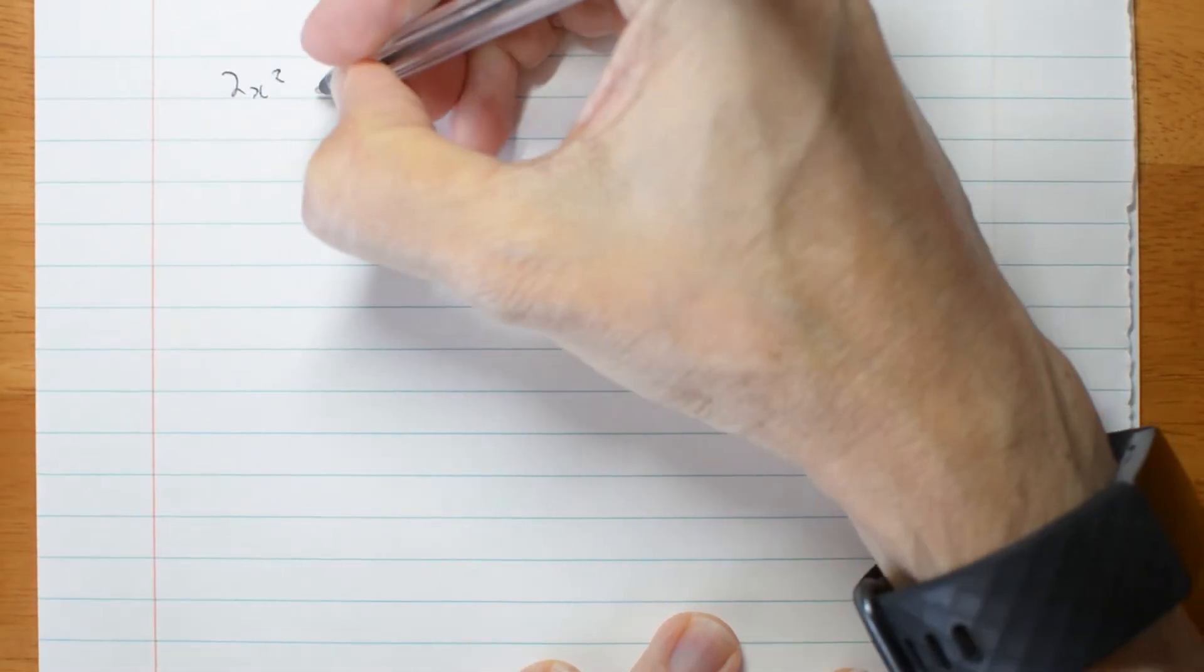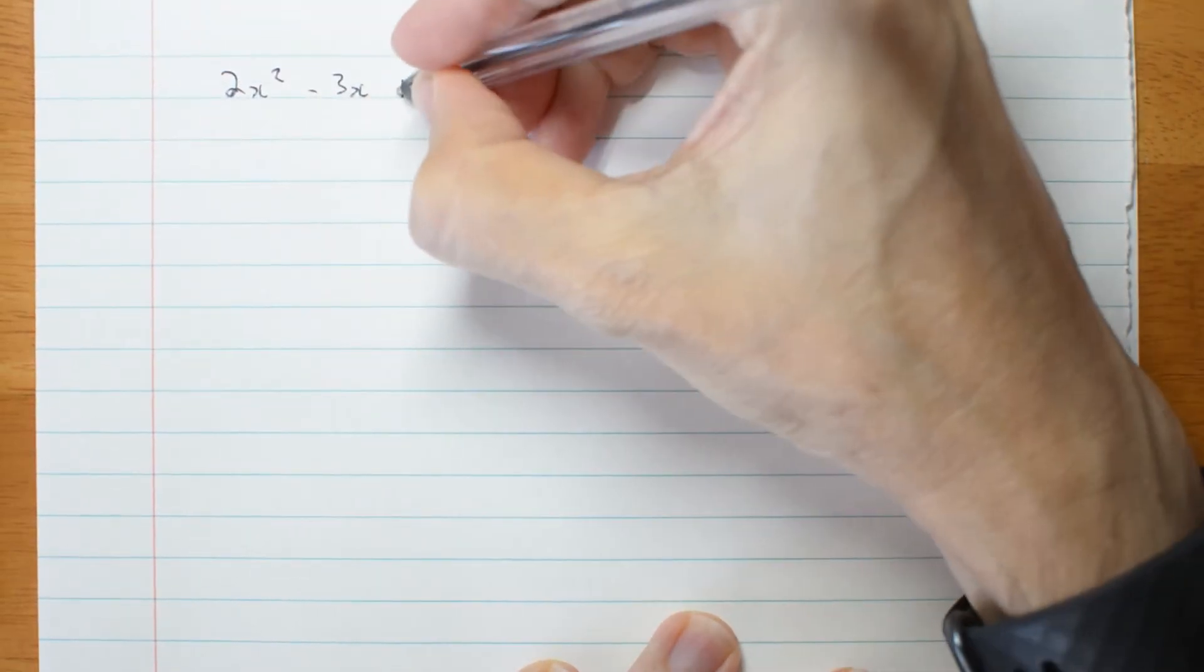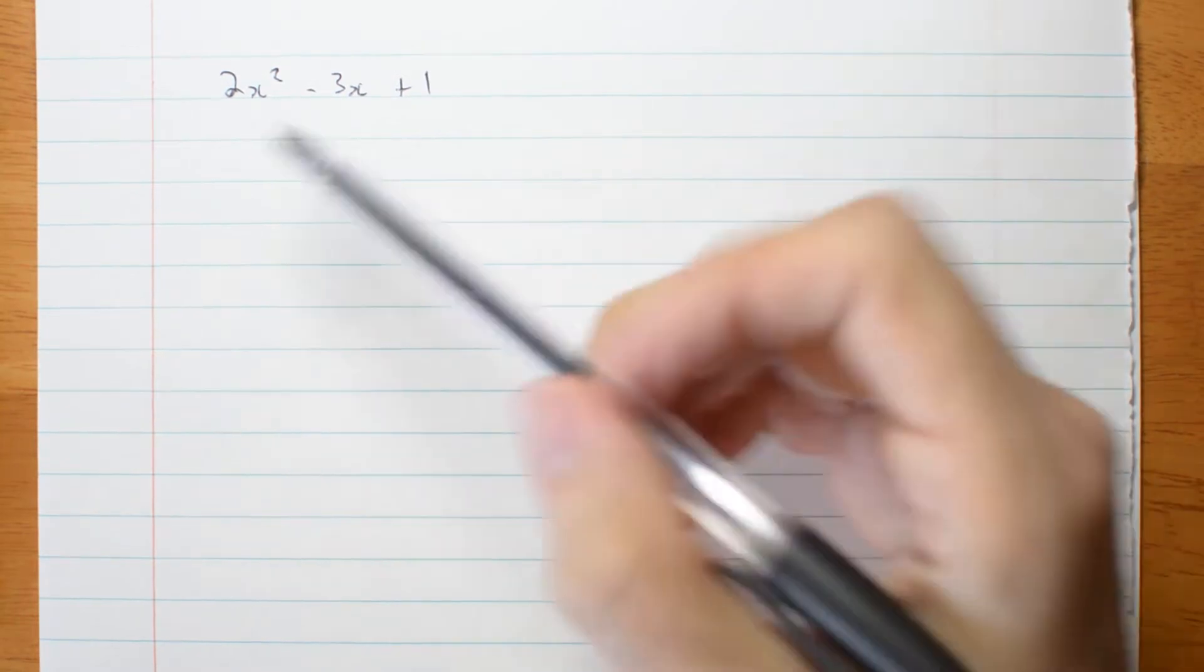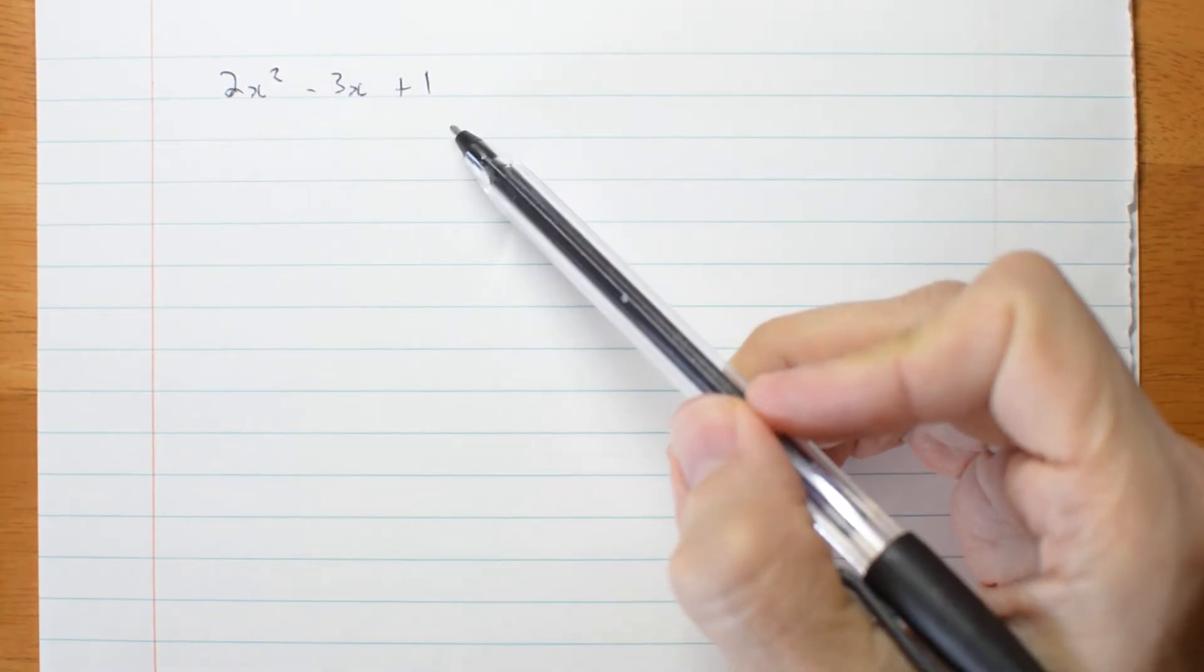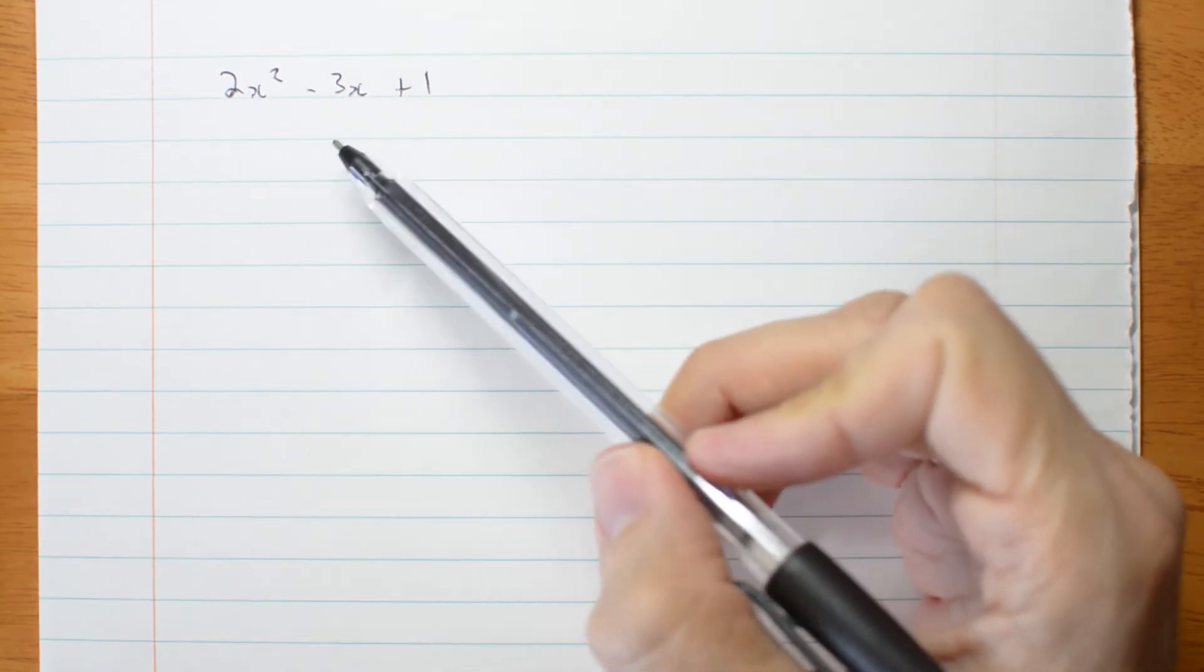2x squared minus 3x plus 1. So the question might say factorize this, or it might say something a bit fancier, it might say determine linear factors of this expression.